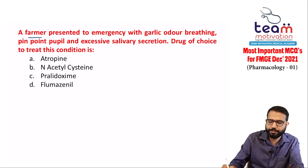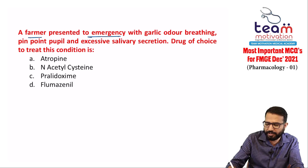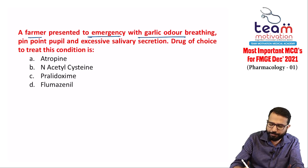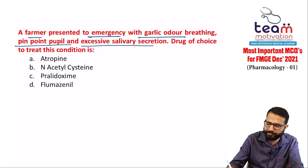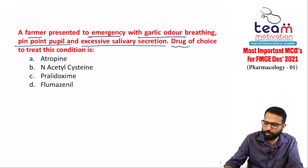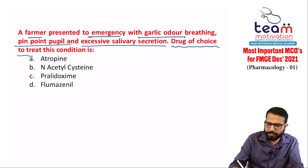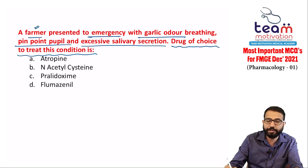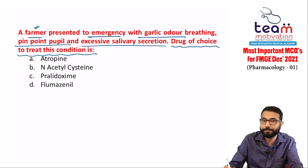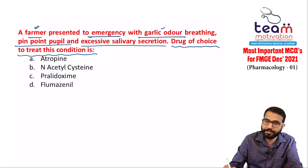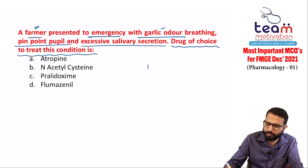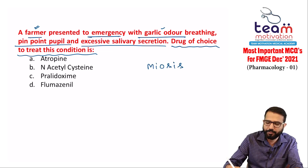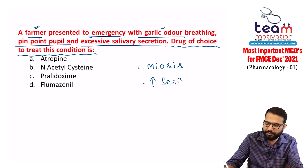Next question: a farmer presents to the emergency with garlic odor breathing, pinpoint pupils, and excessive salivary secretion. In a farmer with poisoning, suspect insecticide/pesticide (organophosphate) poisoning. Pinpoint pupil (miosis) and excessive salivary secretion are characteristic symptoms of cholinergic poisoning.